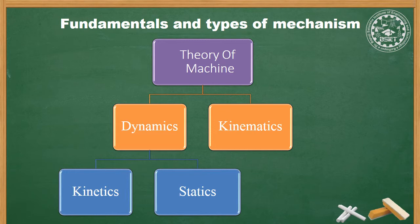For example, in Kinematics we study position, displacement, rotation, speed, and velocity of parts. We do not include forces — we only study the relative motion and consider mass, not forces. Simply, Kinematics is the study of relative motion between the various parts of a machine.